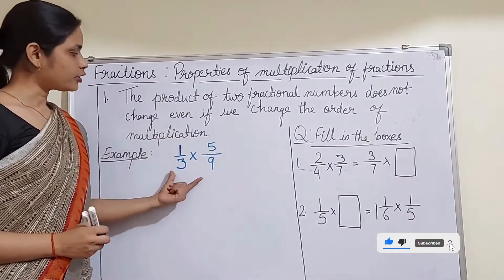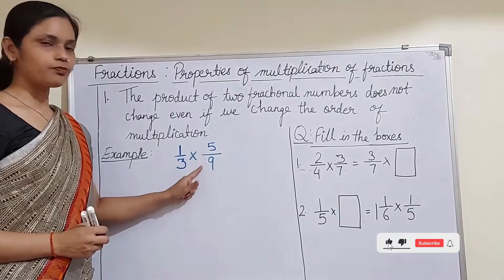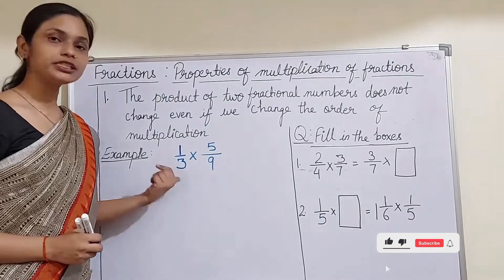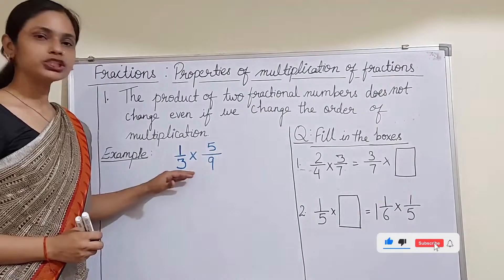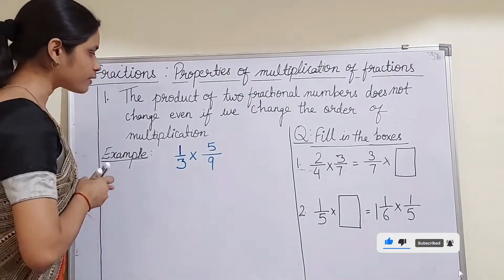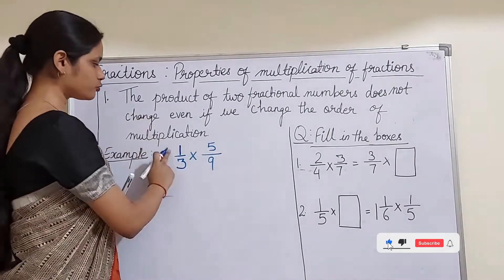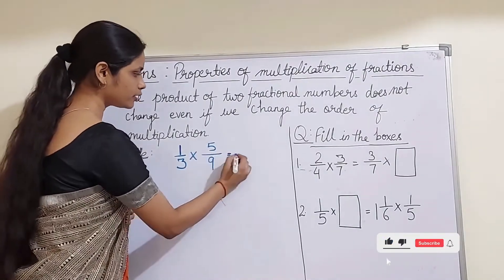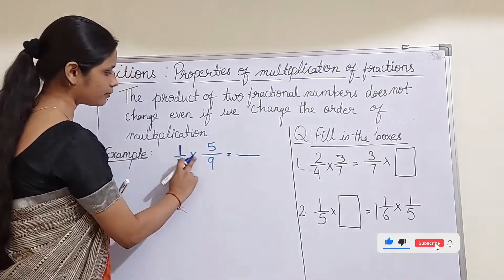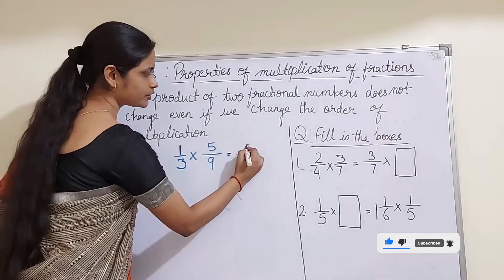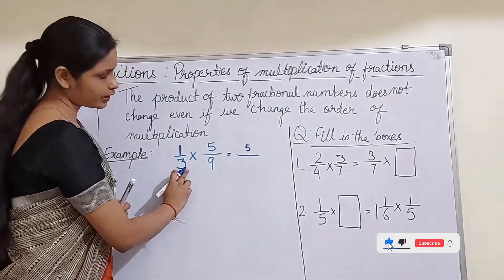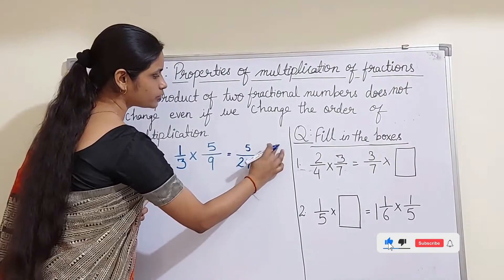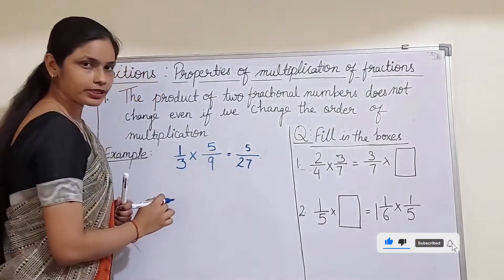I have taken two fractions: 1/3 and 5/9. We have to check the product by changing the order of the fraction numbers. First, let us find the product of 1/3 multiplied by 5/9. In the numerator we have 1 multiplied by 5, which gives us 5. In the denominator we have 3 multiplied by 9, which is 27. So the product is 5/27.